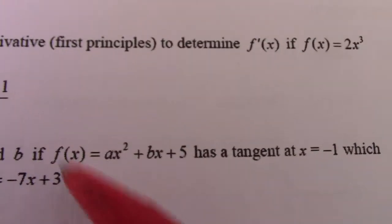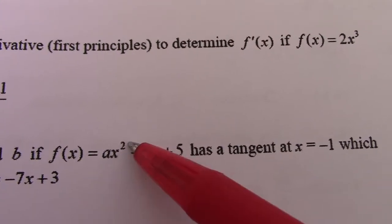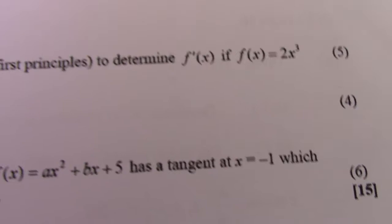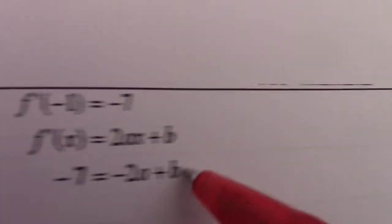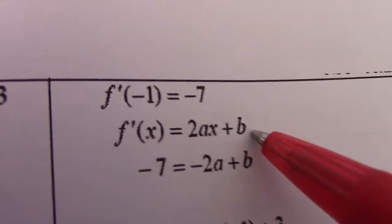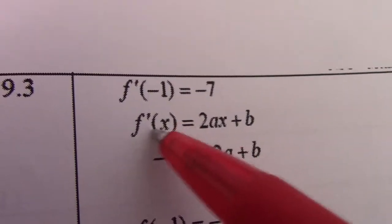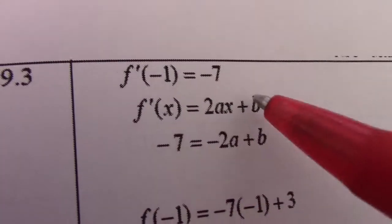2 times a gives me 2ax and 1 times b gives me b. So the first derivative is 2ax + b. The gradient is -7. Remember, the first derivative gives us the gradient of the tangent.